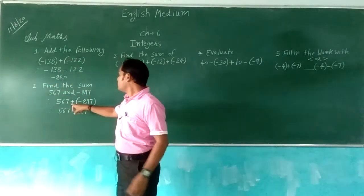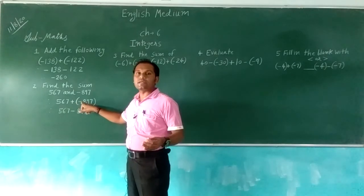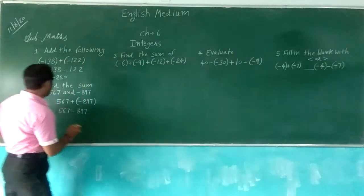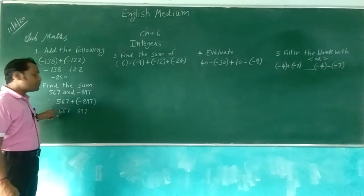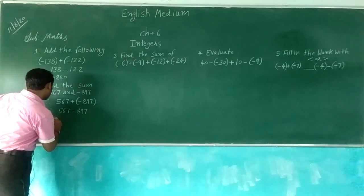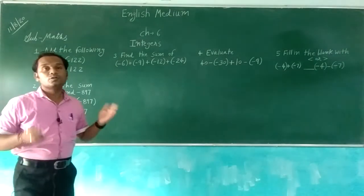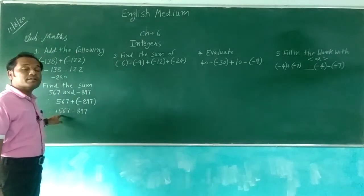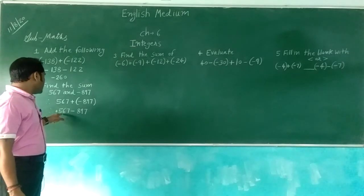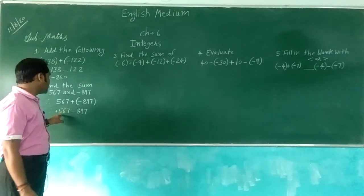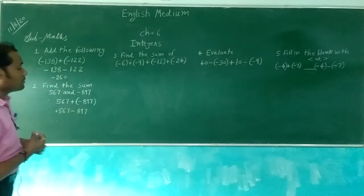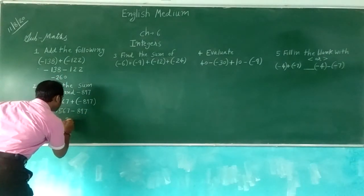Now we will get the answer easily. This 567 sign is plus — no sign given means plus. So plus 567 minus 897. Here, 897 plus minus gives minus: from the greater digit minus the smaller digit. So 897 minus 567 gives 330.